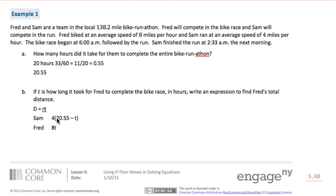So Sam's expression, his distance is 4, his average speed, 4 miles per hour, times the total number of hours minus t, which is how long it took for Fred to complete his. So Sam is 4 times (20.55 - t). Fred, on the other hand, was at an average speed of 8, and it took him t hours to finish. So Fred's expression is 8 times t.